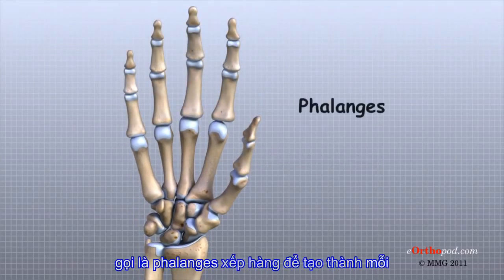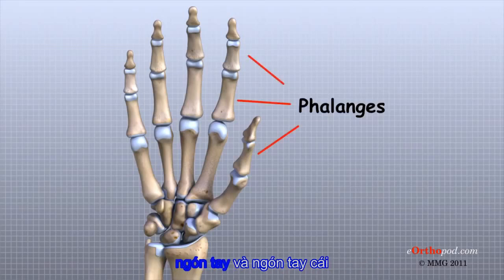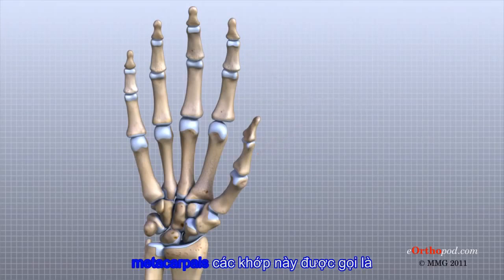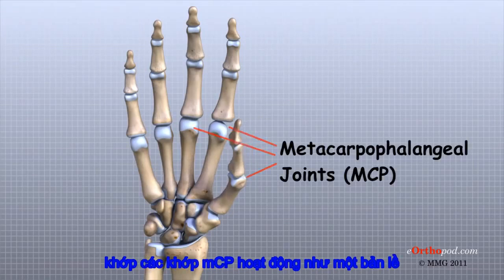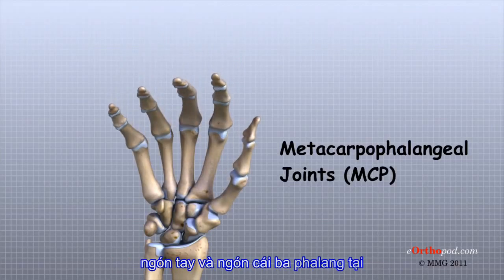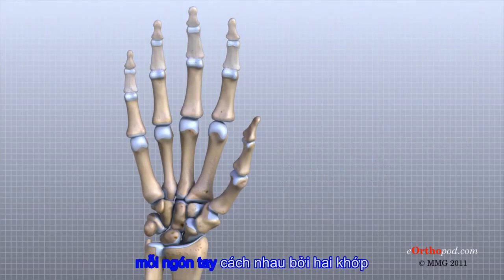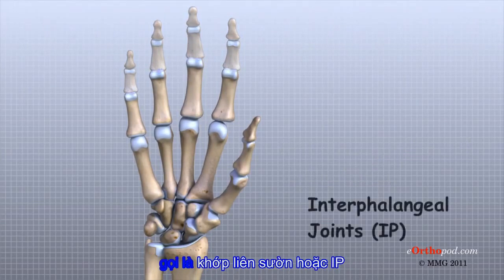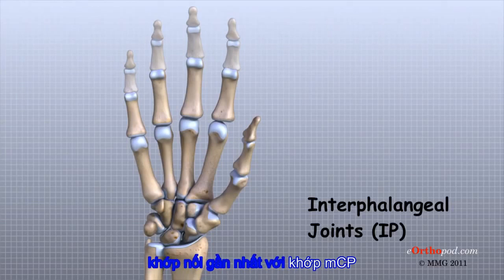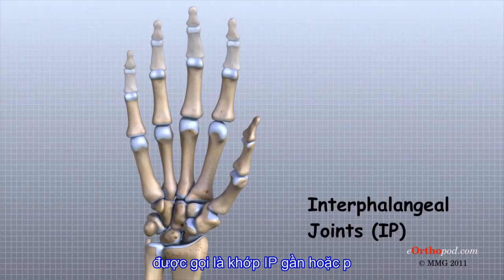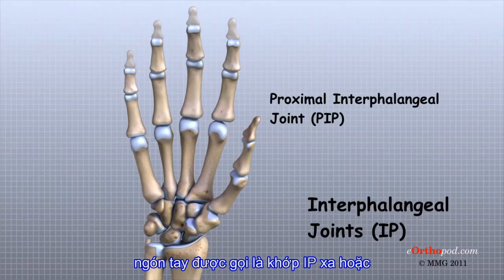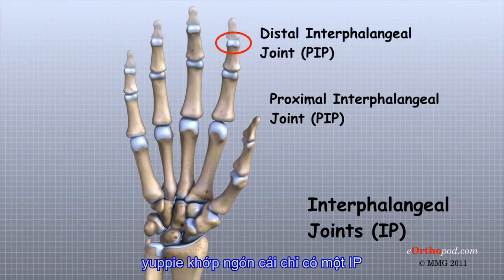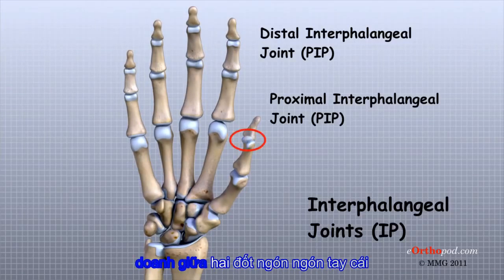Small bone shafts called phalanges line up to form each finger and thumb. The main knuckle joints are formed by the connections of the phalanges to the metacarpals. These joints are called the metacarpophalangeal joints, or MCP joints. The MCP joints work like a hinge when you bend and straighten your fingers and thumb. The three phalanges in each finger are separated by two joints called interphalangeal joints, or IP joints. The one closest to the MCP joint is called the proximal IP joint, or PIP joint. The joint near the end of the finger is called the distal IP joint, or DIP joint. The thumb only has one IP joint between the two thumb phalanges.